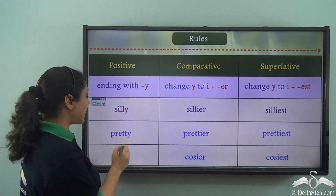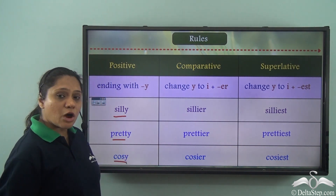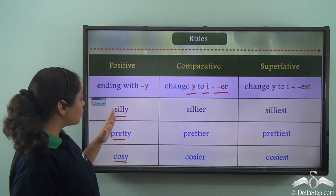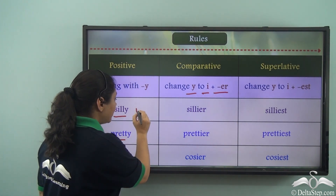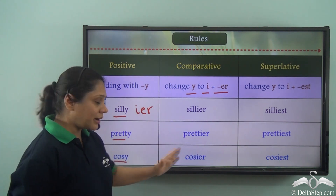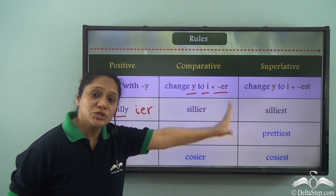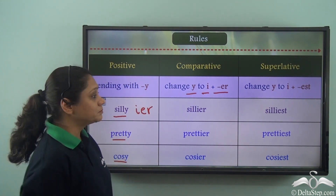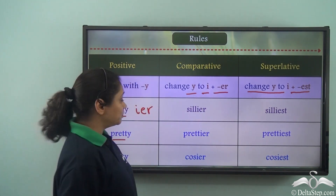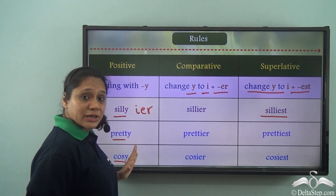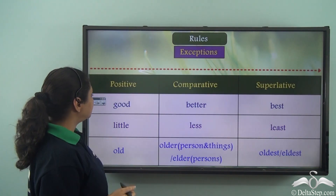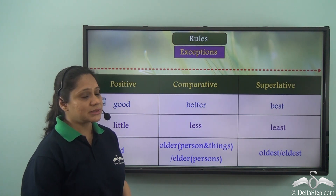When adjectives end with 'y,' such as 'silly,' 'pretty,' or 'cozy,' we form the comparative degree by changing the 'y' to 'i' and then adding -er. So 'silly' becomes 'sillier,' 'pretty' becomes 'prettier,' and 'cozy' becomes 'cozier.' To form the superlative degree, we change the 'y' to 'i' and add -est, so 'silly' becomes 'silliest,' 'pretty' becomes 'prettiest,' and 'cozy' becomes 'coziest.'